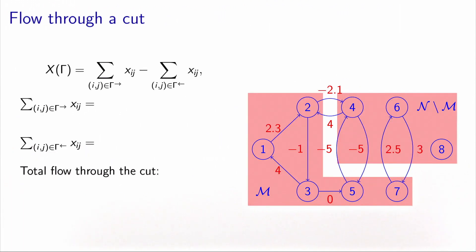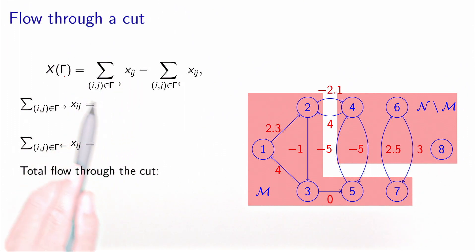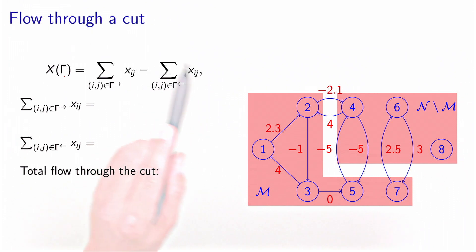We have defined a cut of a graph as a separation of the graph into nodes on the left bank and nodes on the right bank, with the analogy of a river. Now we can calculate the flow through a cut. Considering the arcs which are the bridges between the two banks, we count the total number of flows using these bridges. The flow through a cut, denoted x(γ), is equal to the sum of the flows on the forward arcs of the cut minus the flow on the backward arcs of the cut.